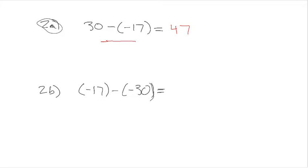Problem 2b says negative 17 minus negative 30. Again, we are subtracting a negative, which is the same thing as adding a positive, but this time we're starting at negative 17. We have to go up 30 from negative 17, which gives us positive 13. Some answers that were marked wrong on the test showed it as negative 13 — it had to be positive.